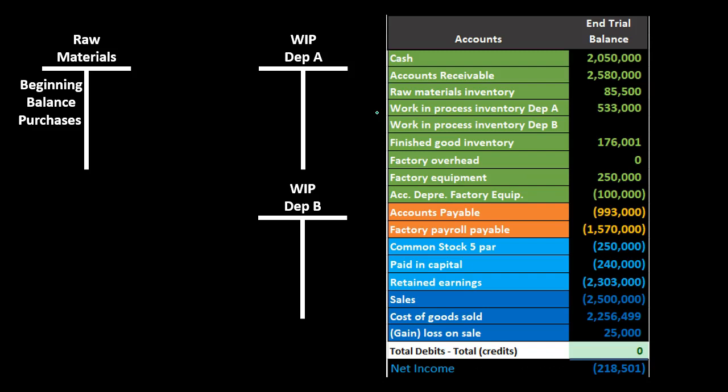A process cost system typically follows a linear type of process. For example, making candy might go through Department 1 where the candy is made, then Department 2 where the candy is packaged, and then to finished goods. This means we may have two or more work in process accounts representing different departments, compared to a job cost system's single work in process account supported by job cost worksheets.